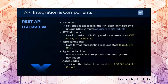Each entity used in a REST API is represented by a URI, like API/users or API/products. Methods are used to perform CRUD operations — GET, POST, PUT, DELETE. Representations define the data format representing the resource state. Hypermedia links are embedded links in responses that enable dynamic navigation, so we can even be redirected to other pages. And finally, status codes.